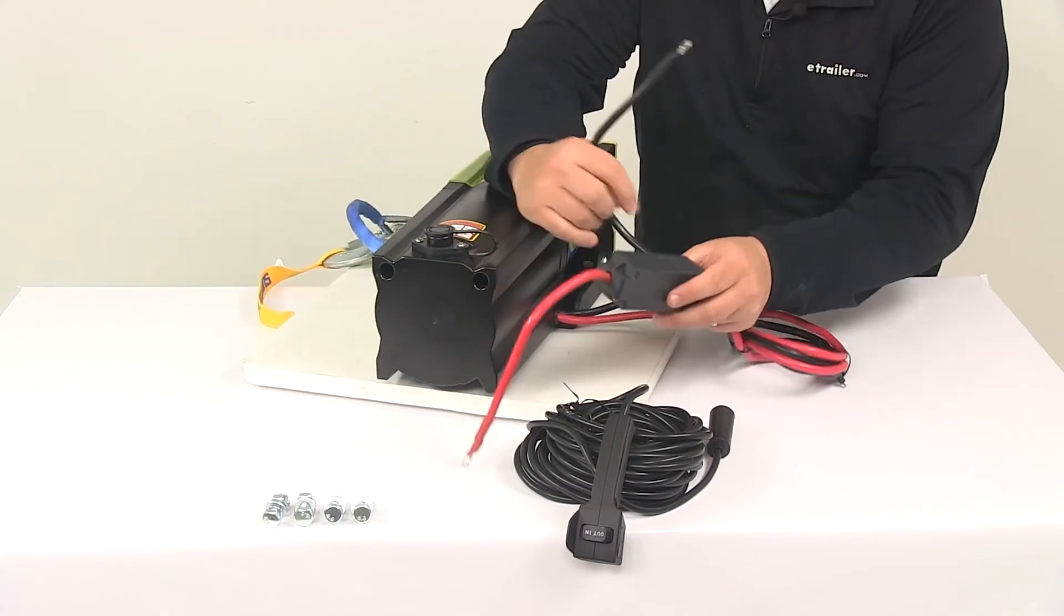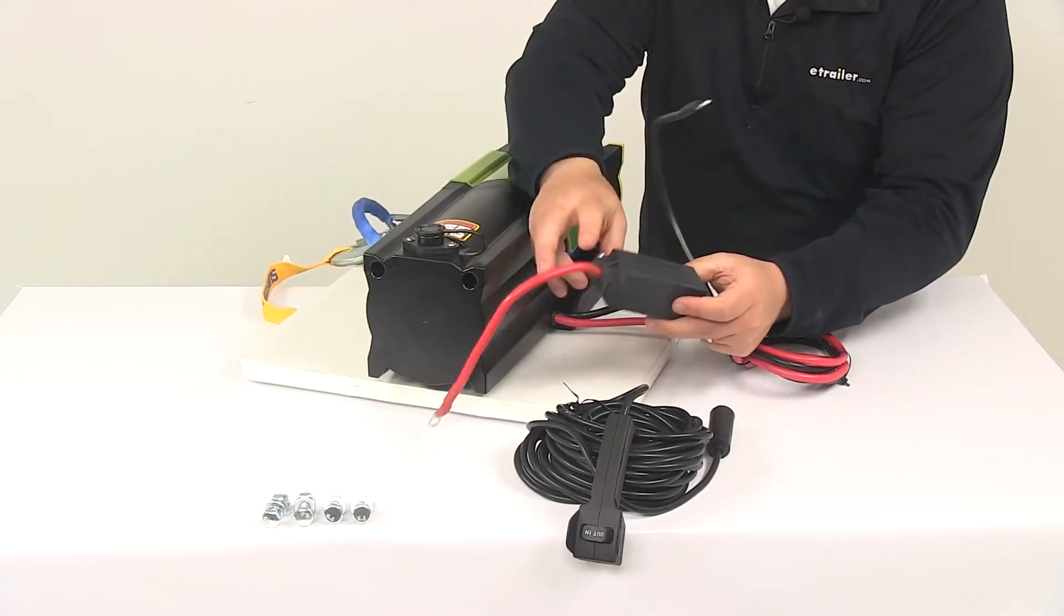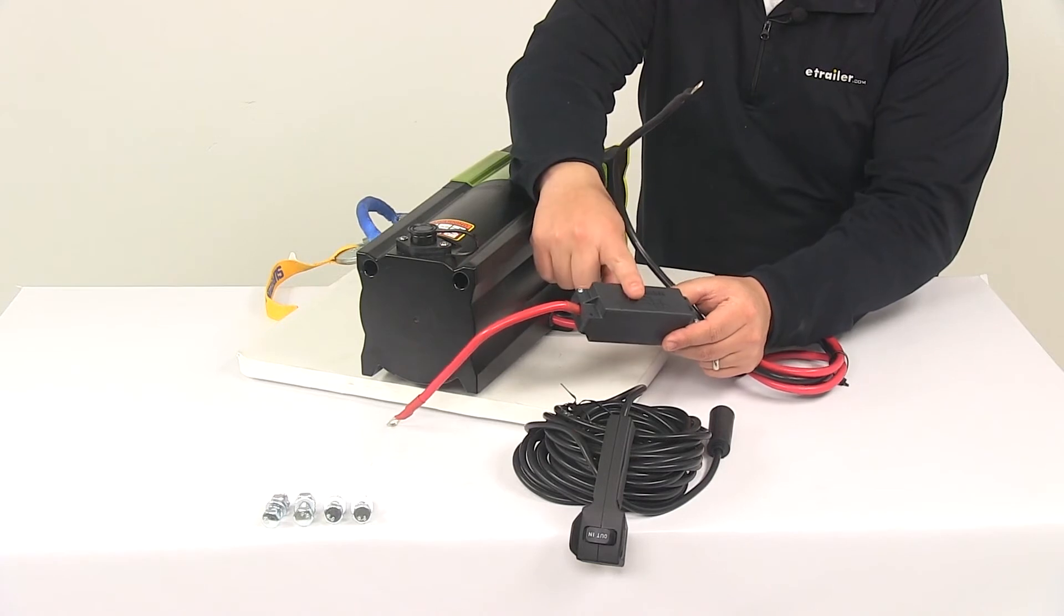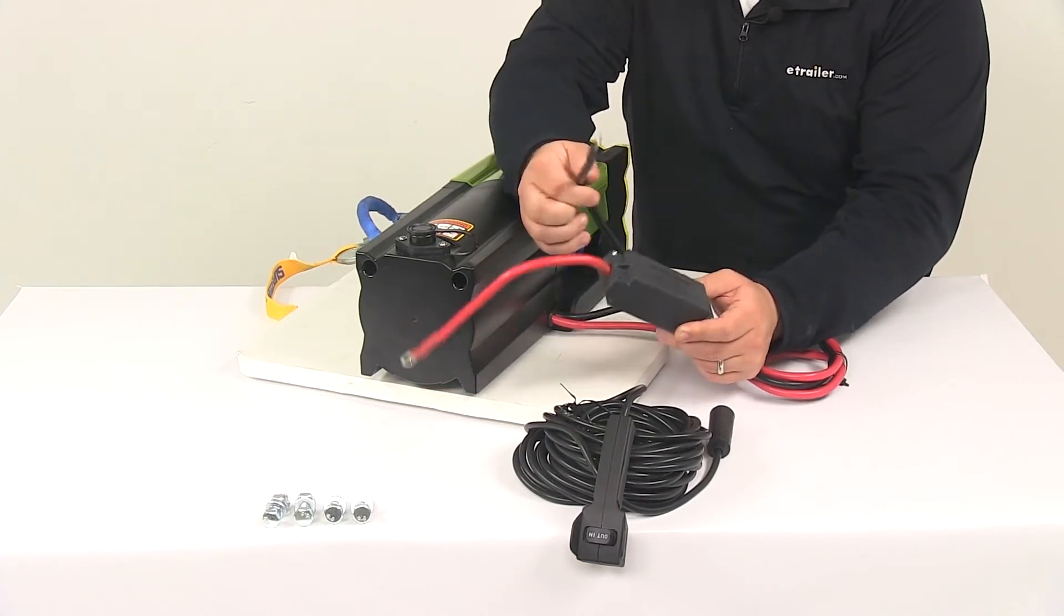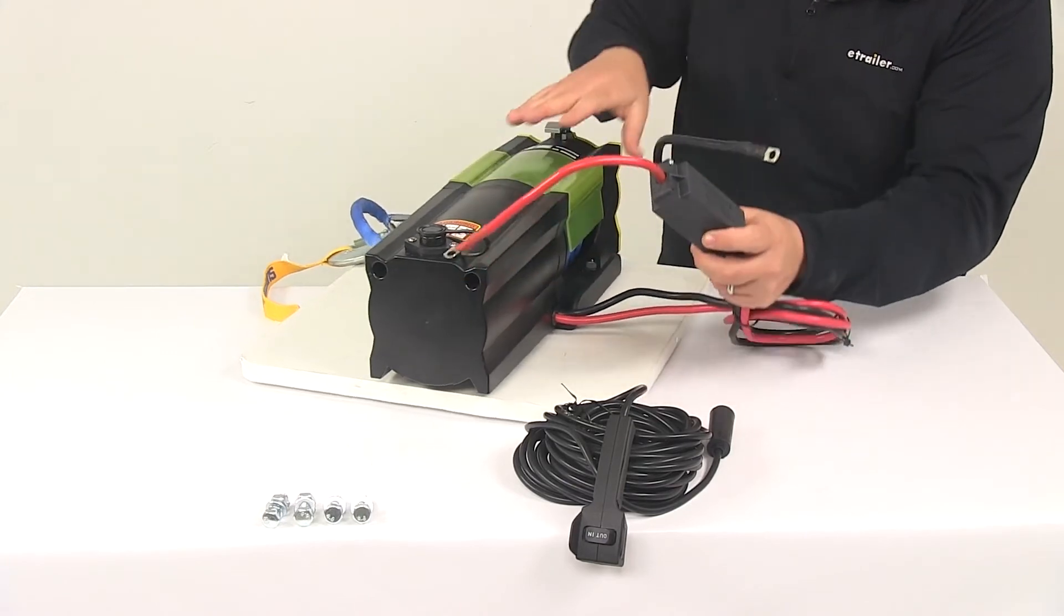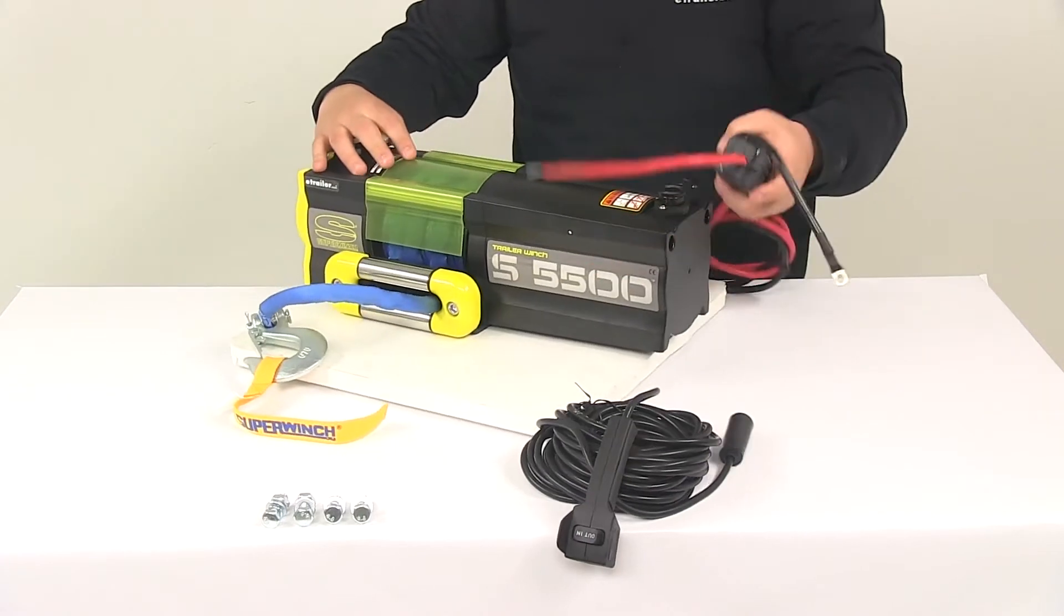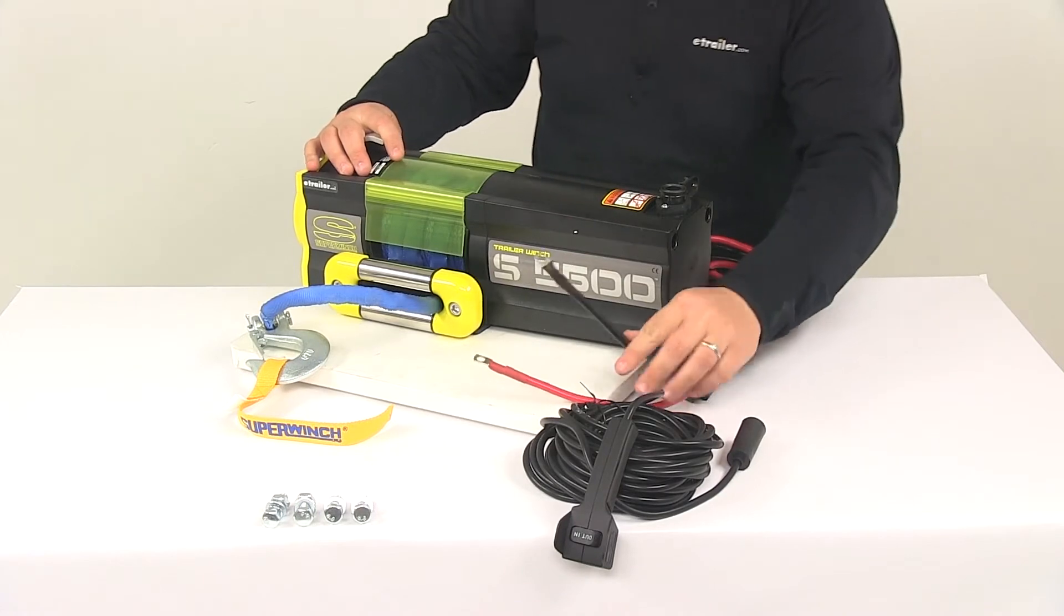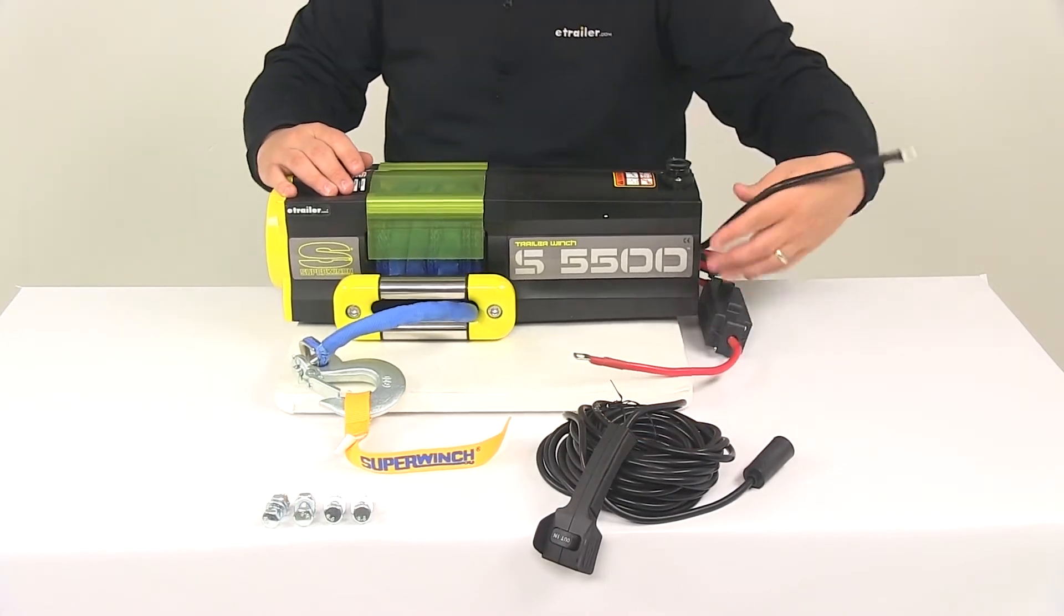You can see the black box here on the red wire—that's where the circuit breaker is located. Each cable has the ring terminals already installed so you can easily get it connected to your battery. Pre-wired makes the installation of the unit very simple, very quick, and very easy.